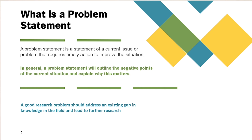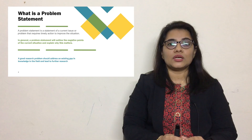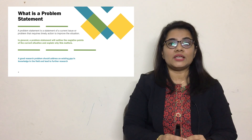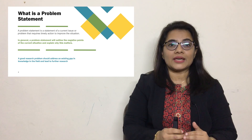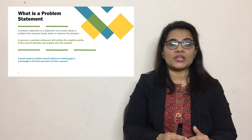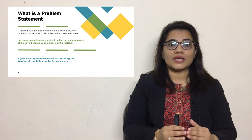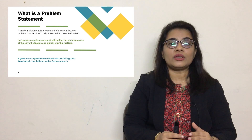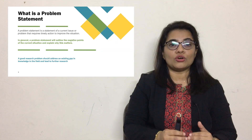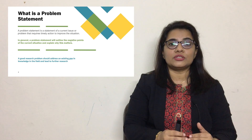In general, a problem statement will outline the negative points of the current situation and explain why this matters. So while stating a problem statement, you need to mention the gaps or negative points of the situation you are exploring — what are the basic gaps, what negativity is prevailing in that situation. A good research problem should address an existing gap in knowledge in the field and lead to further research.